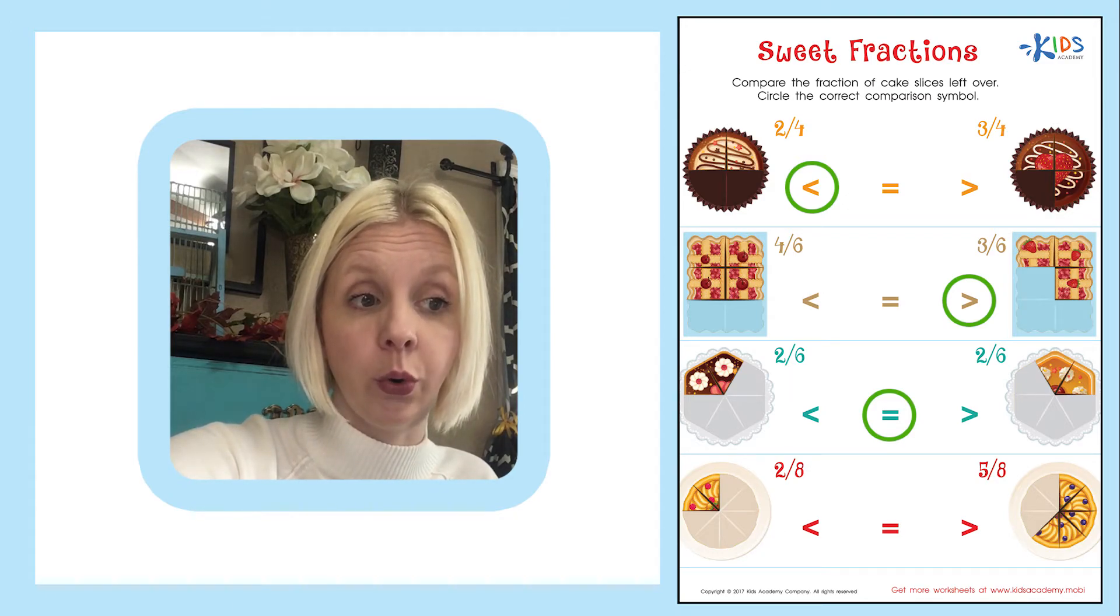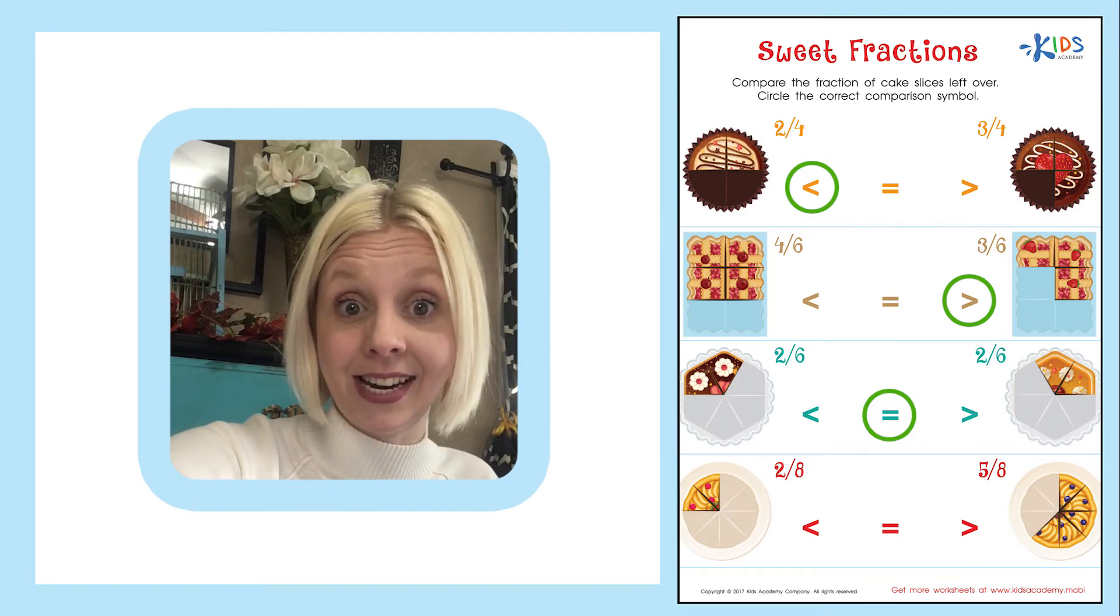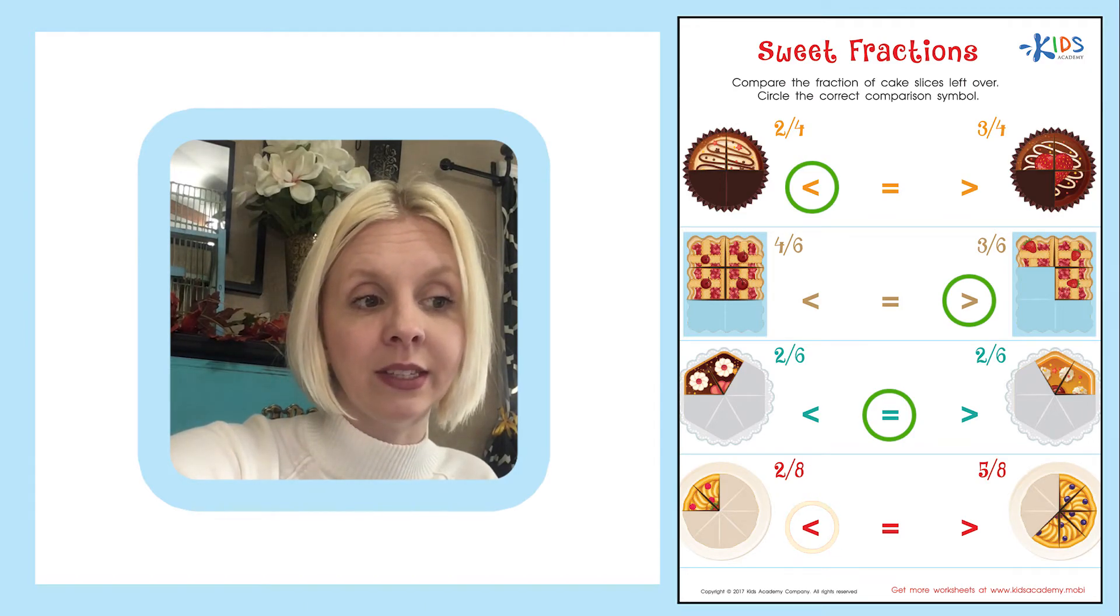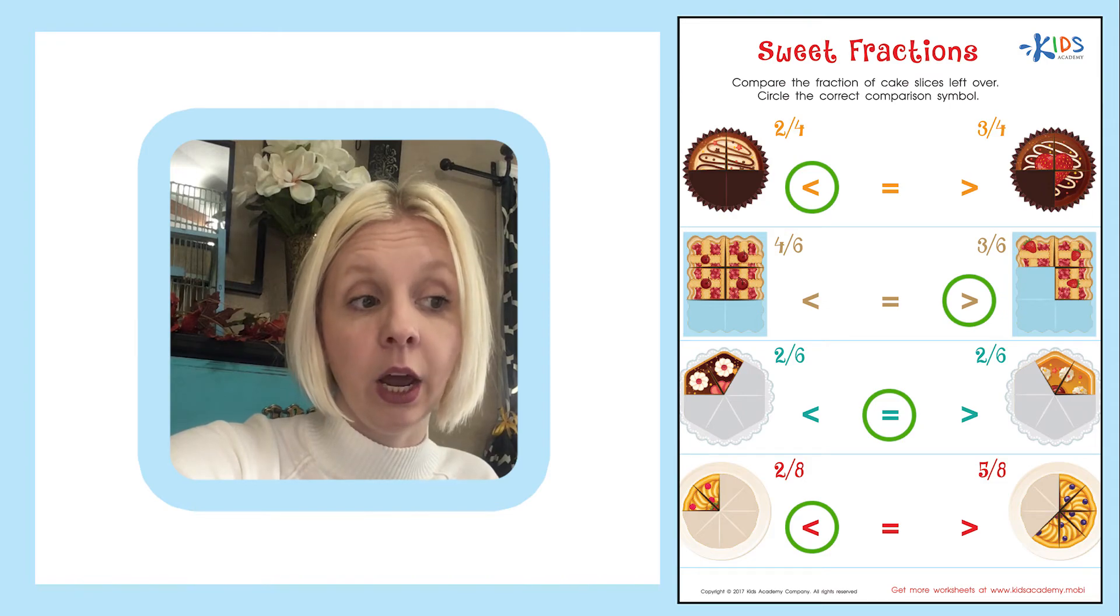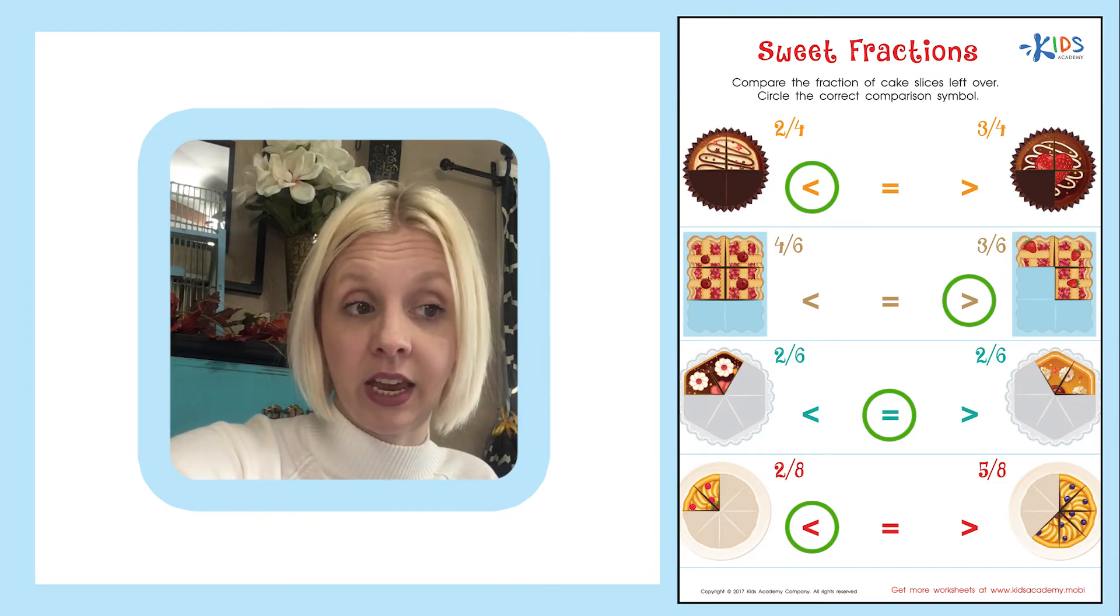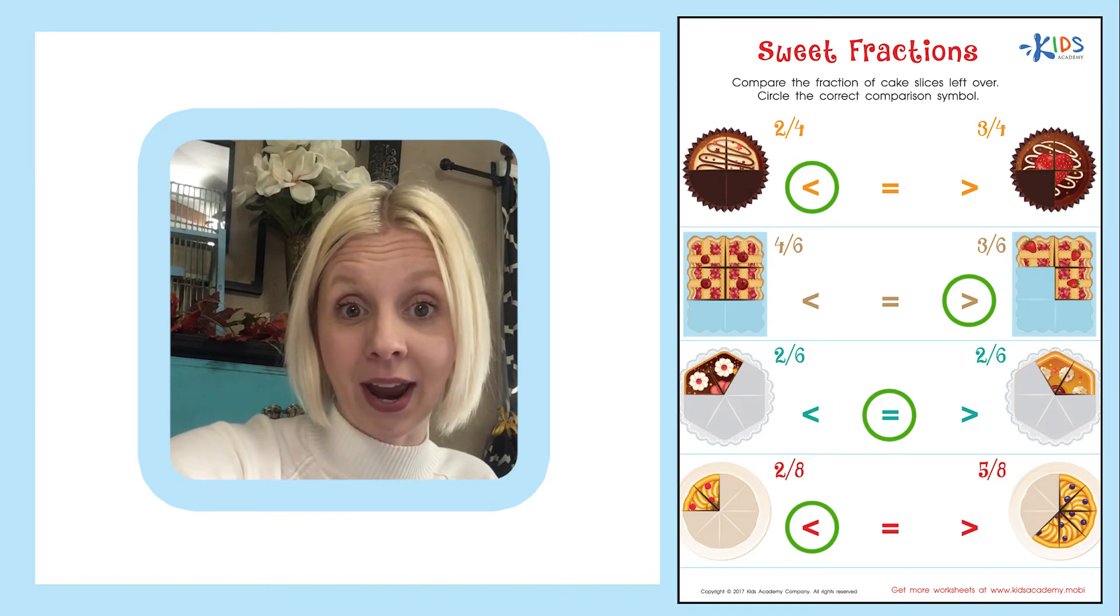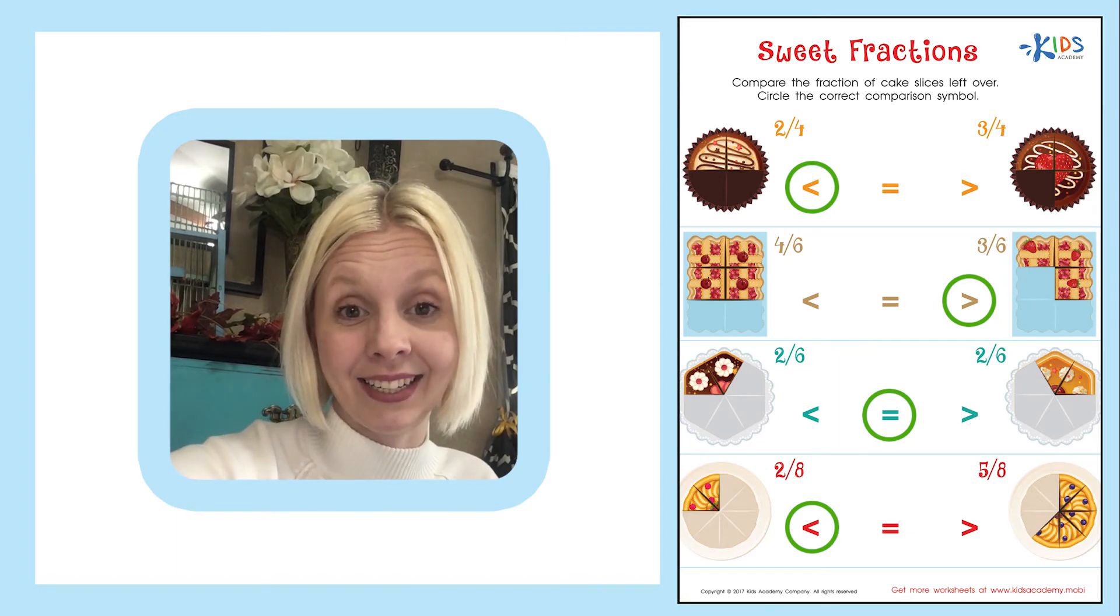This one right here has five pieces and this one only has two. So since five is more than two, we're gonna face this way so it looks like it's gonna eat this one. And this is our less than sign because we would read it this way. Two-eighths is less than five-eighths. Great job today. Bye!